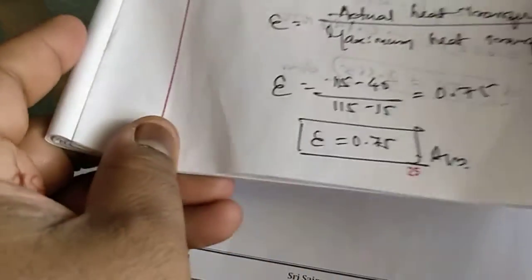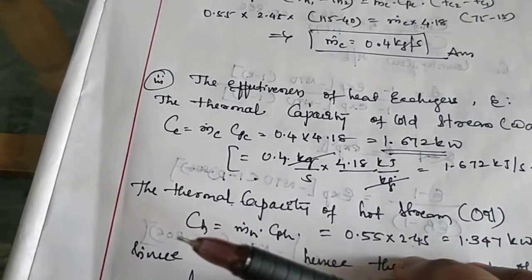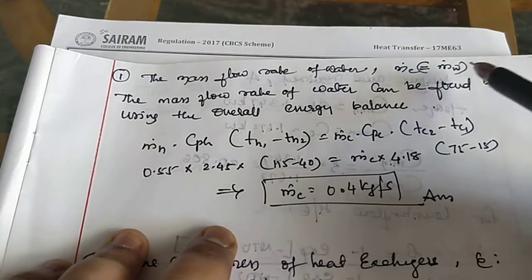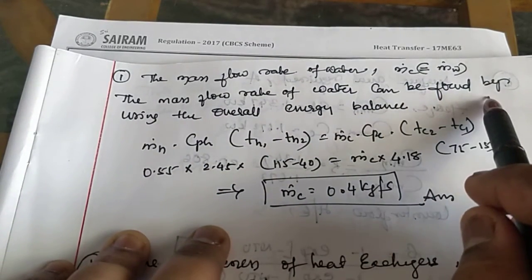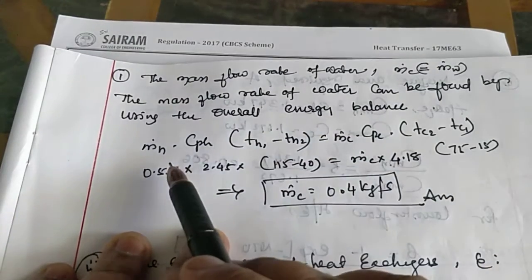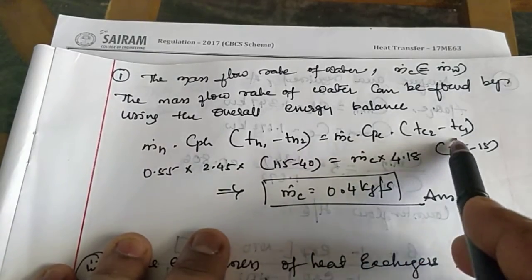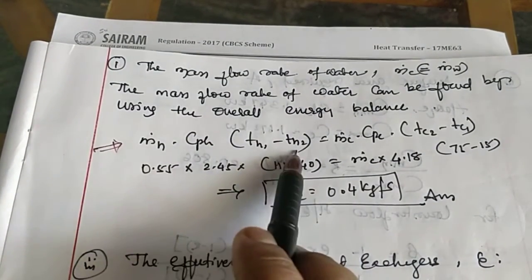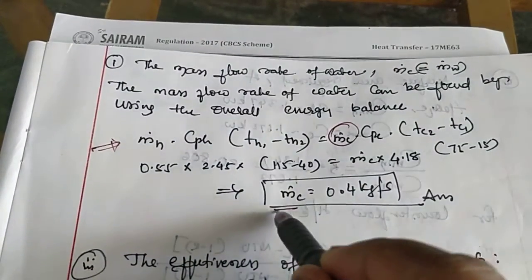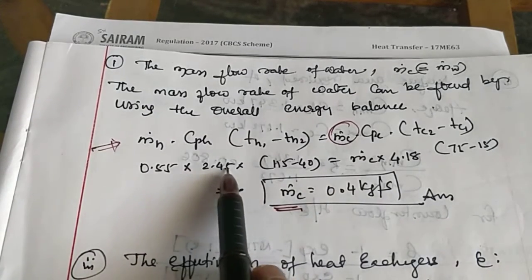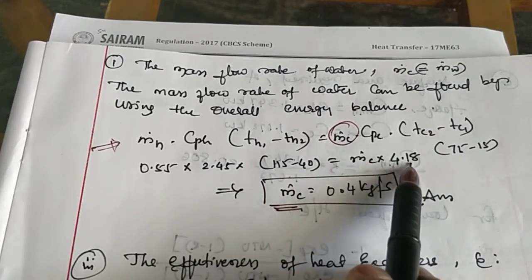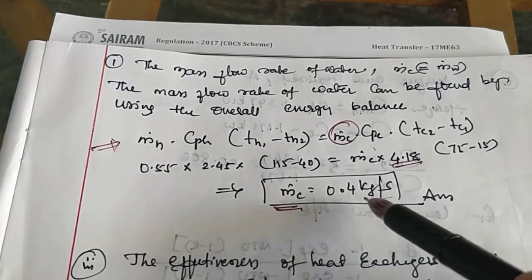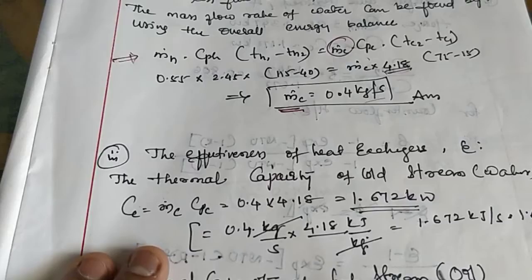The mass flow rate of water, M_C, can be found using the overall energy balance: M_H × C_PH × (T_H1 − T_H2) = M_C × C_PC × (T_C2 − T_C1). Substituting the given data: 0.55 × 2.45 × (115 − 40) = M_C × 4.18 × (75 − 15). The unknown is M_C, and solving gives M_C = 0.4 kg/s. This is the mass flow rate of the water.